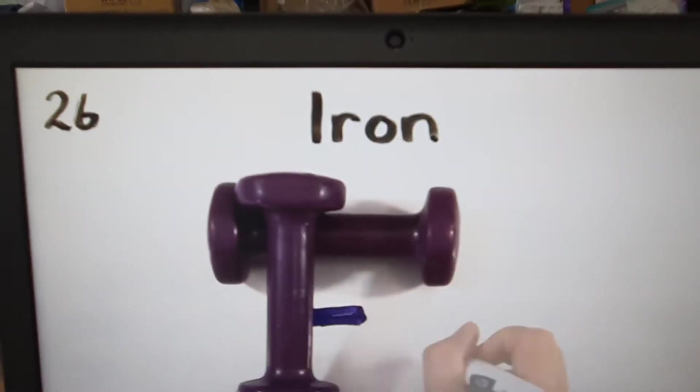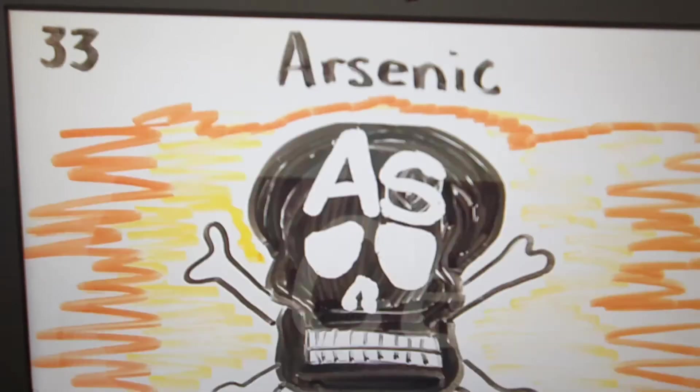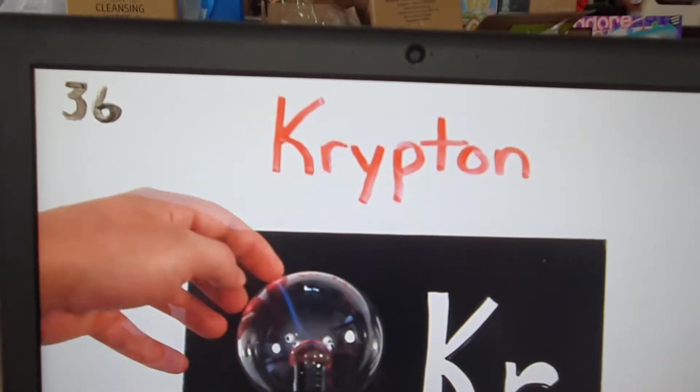Iron is the 26th, copper, nickel, zinc, gallium, germanium, arsenic, selenium, bromine, krypton.